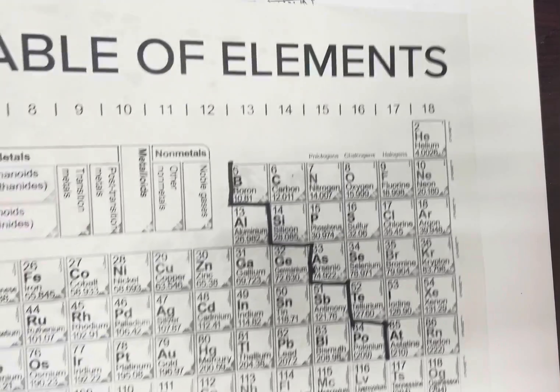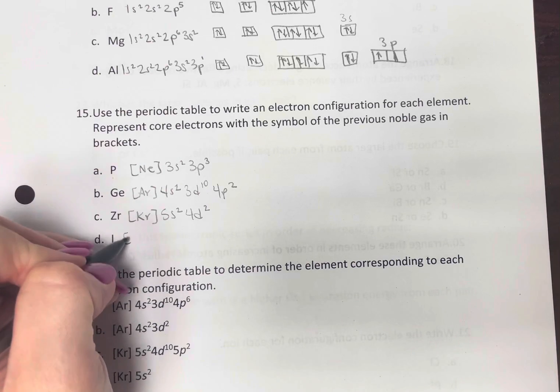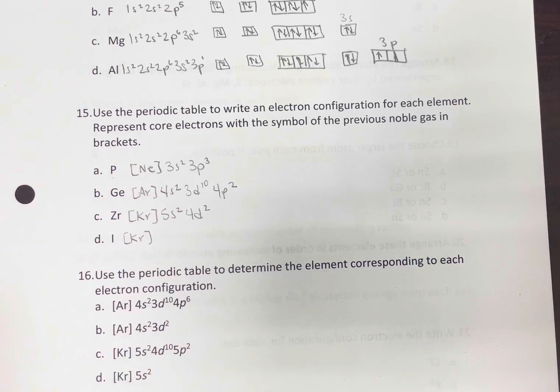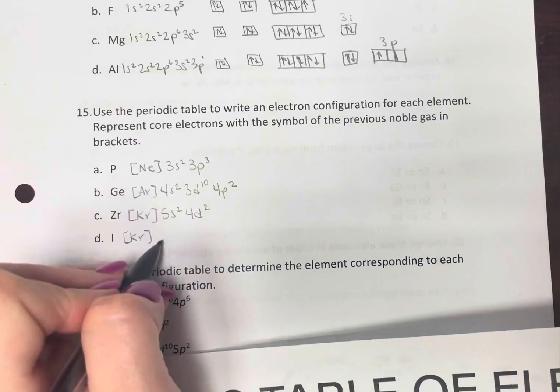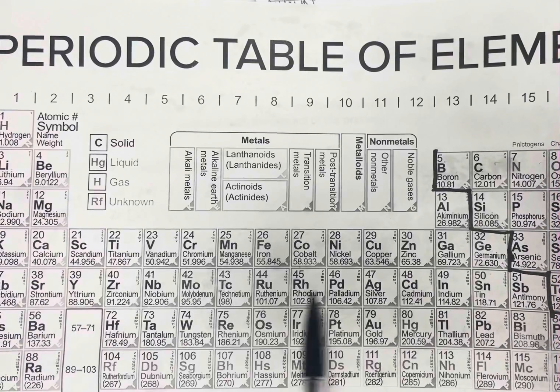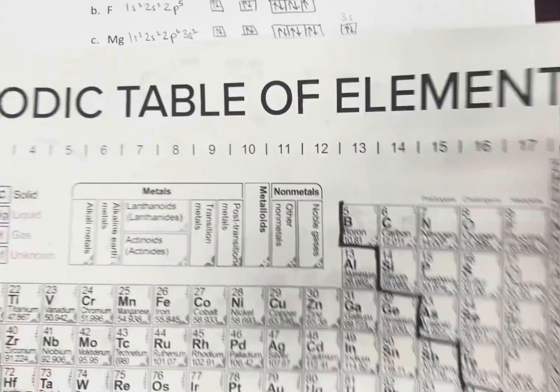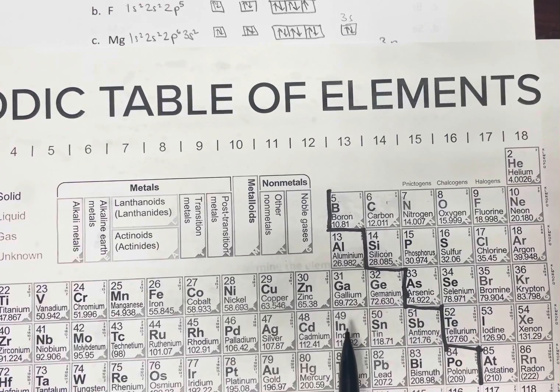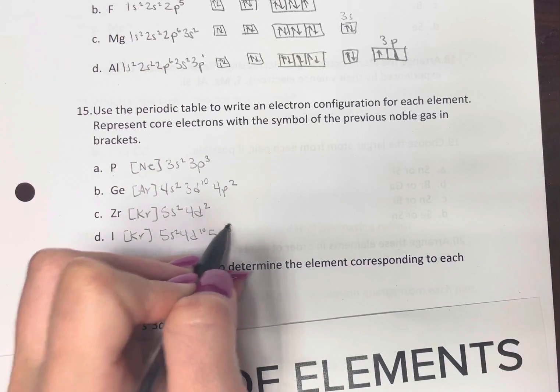This is iodine. Iodine is here. It's in the fifth row. That noble gas is krypton again. So in the fifth row, we're going to have 5s2. All the way through the d block, 4d10. And then we're back up to 5p, 1, 2, 3, 4, 5. 5p5.